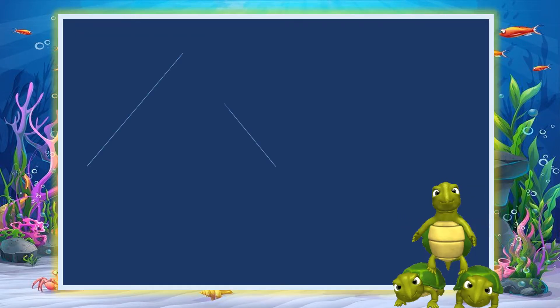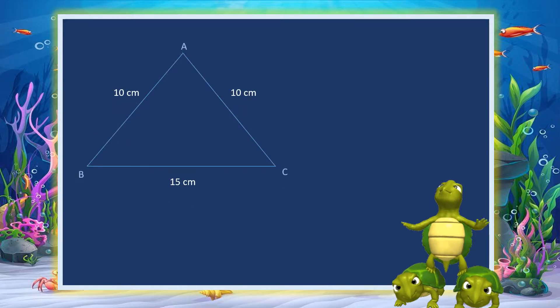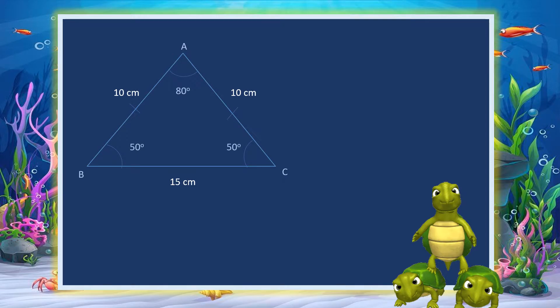An isosceles triangle is a triangle with two equal sides. As shown from the figure, two of the sides have equal length and the remaining side has different length.